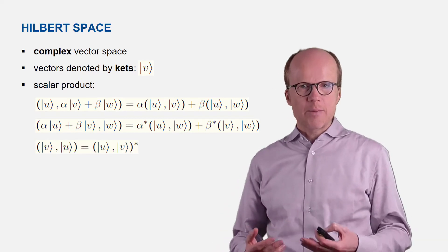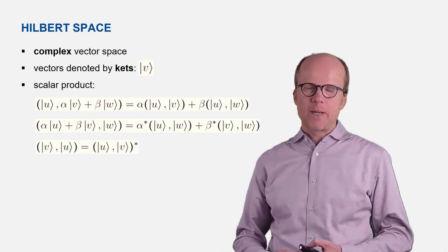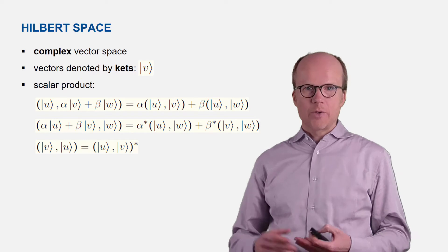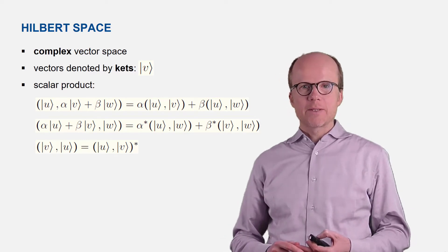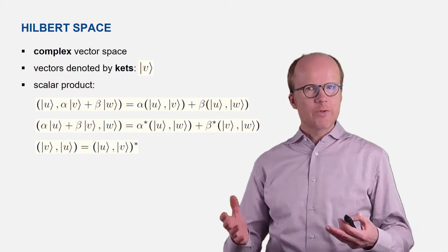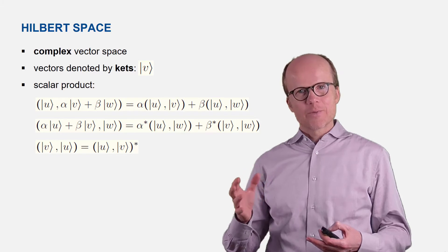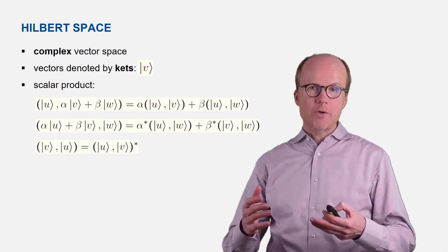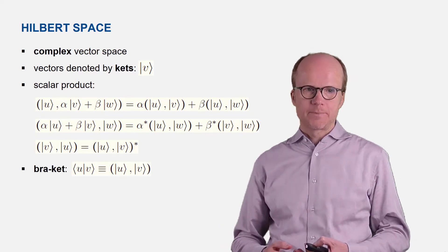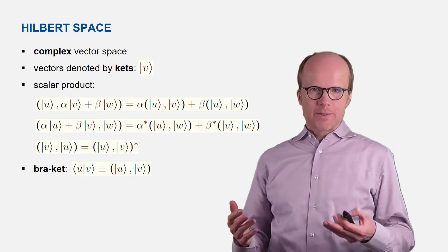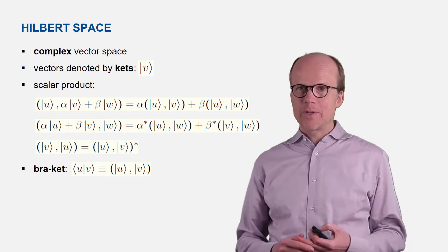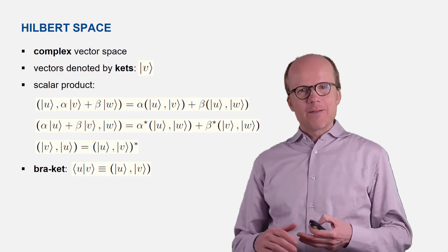Also, in contrast to the scalar product in a real vector space, it is not symmetric but skew-symmetric. So when you flip the arguments you get a complex conjugation. You can see there are a few small modifications that are necessary when you go from a real vector space to a complex vector space.